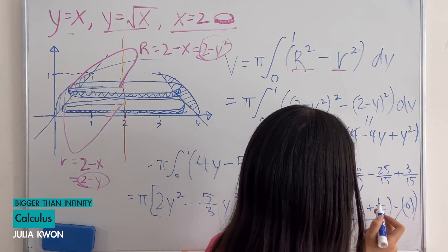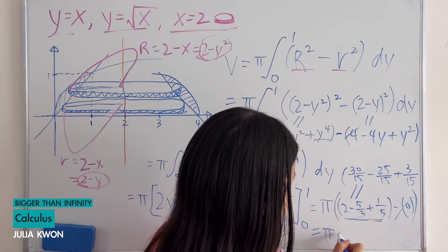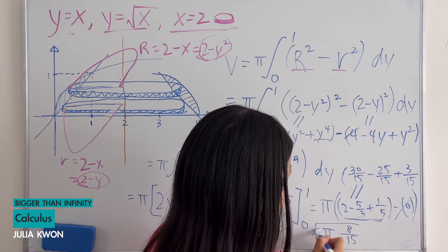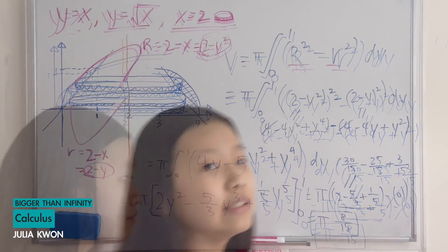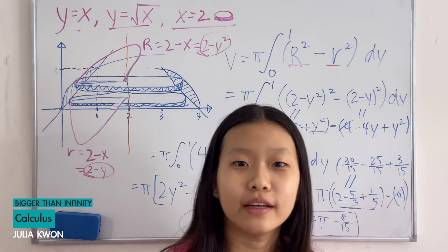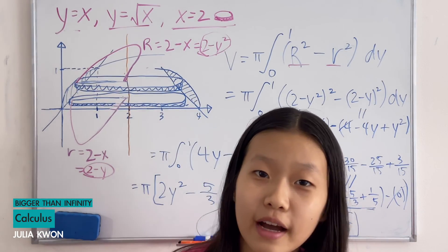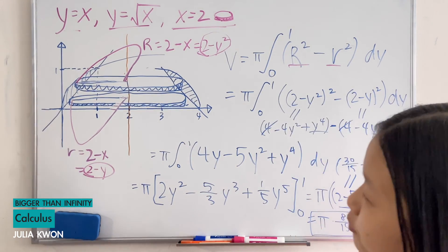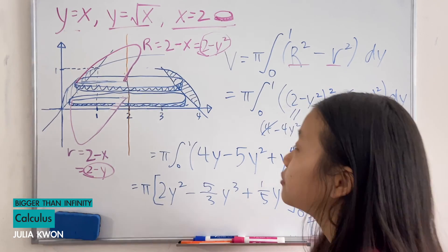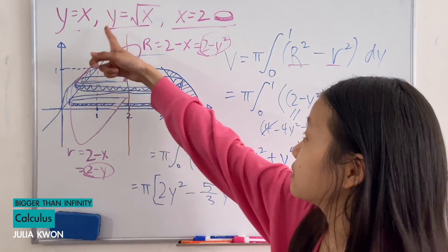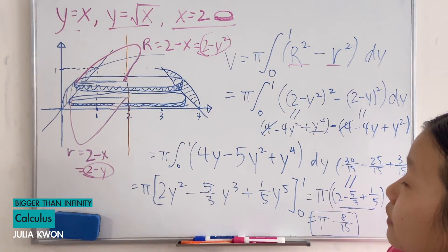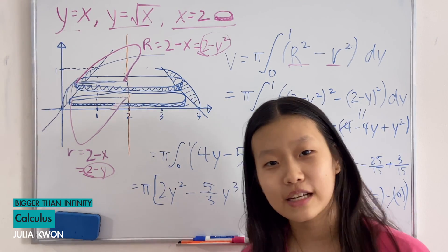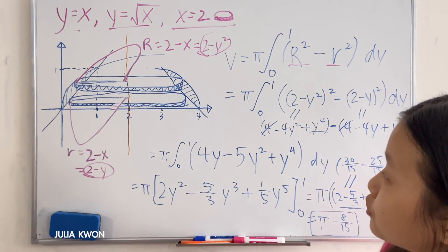So simplifying gives us 8/15, which means the final answer for the volume is 8π/15. In this video, I explained how to find the volume of the region bounded by y equals x and y equals square root of x when the region is rotated about the line x equals 2.